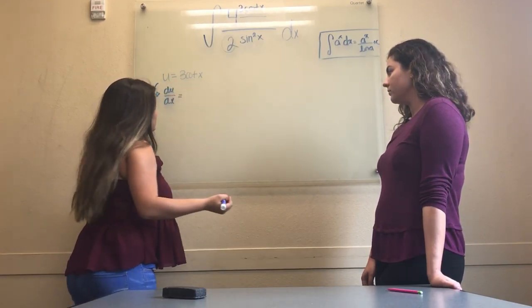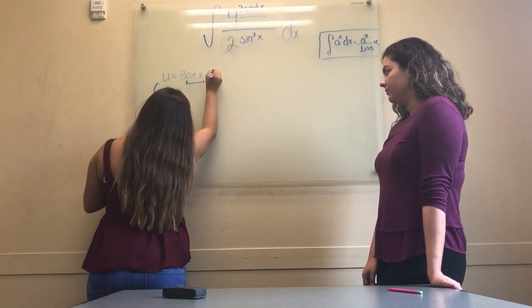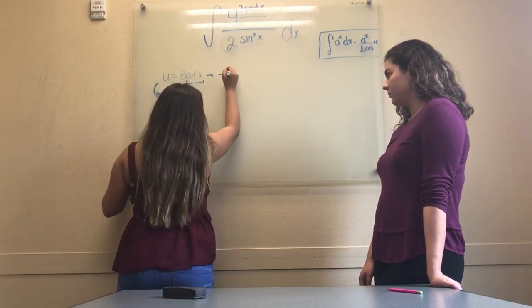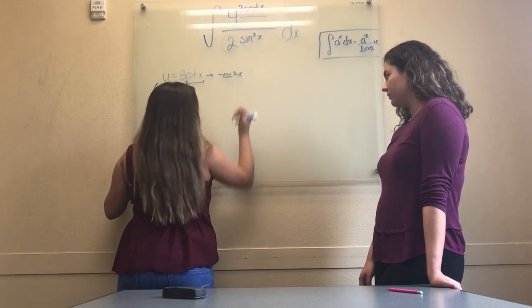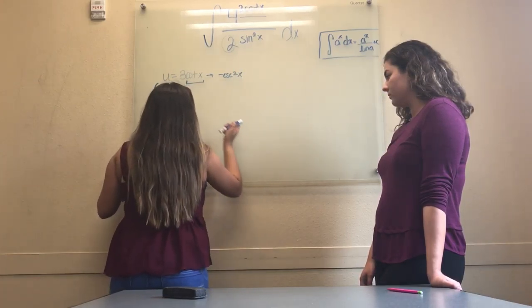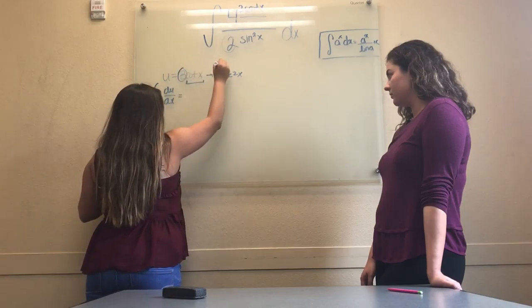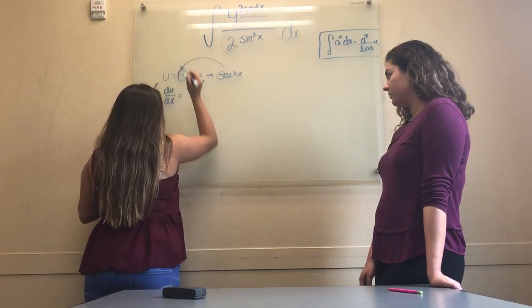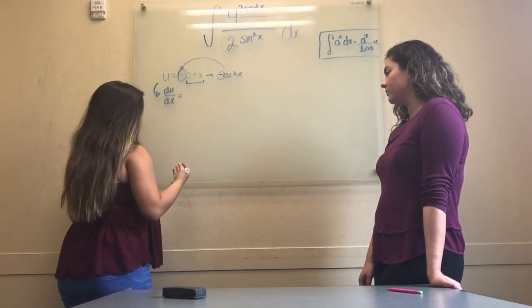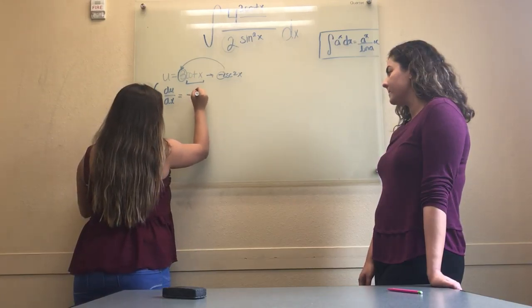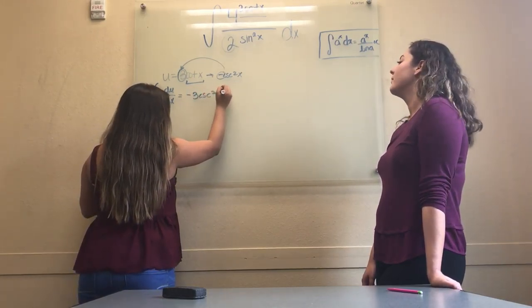From past lessons, we know that cot x is changed to negative cosecant squared x when asked to find the derivative. However, we cannot ignore the negative or the 3, so we bring the negative in front of the 3.